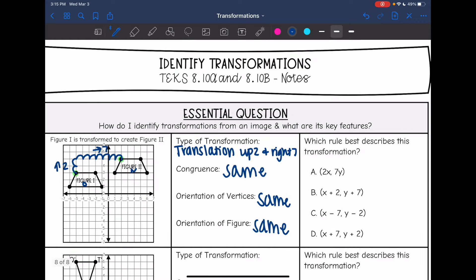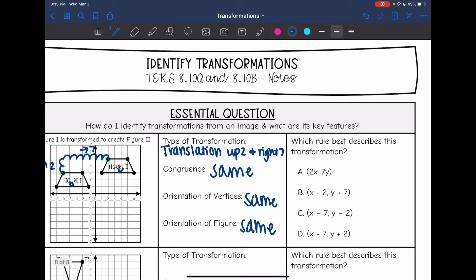Okay, then it says which rule best describes this transformation? Well, translations, we add and subtract numbers. So I'm going to go ahead and eliminate A and I went up two, that's going to affect the y values. So there should be a two with the y and then right seven, that's going to be a seven with the x.